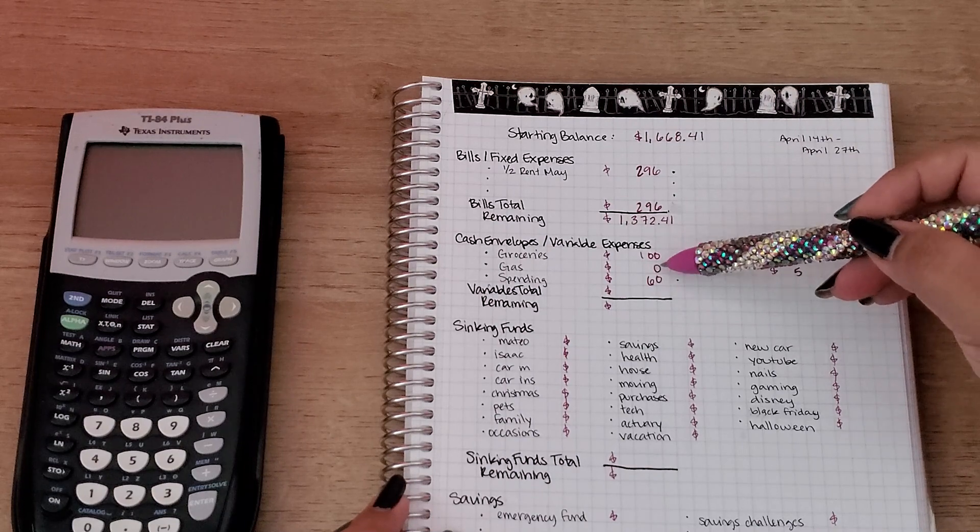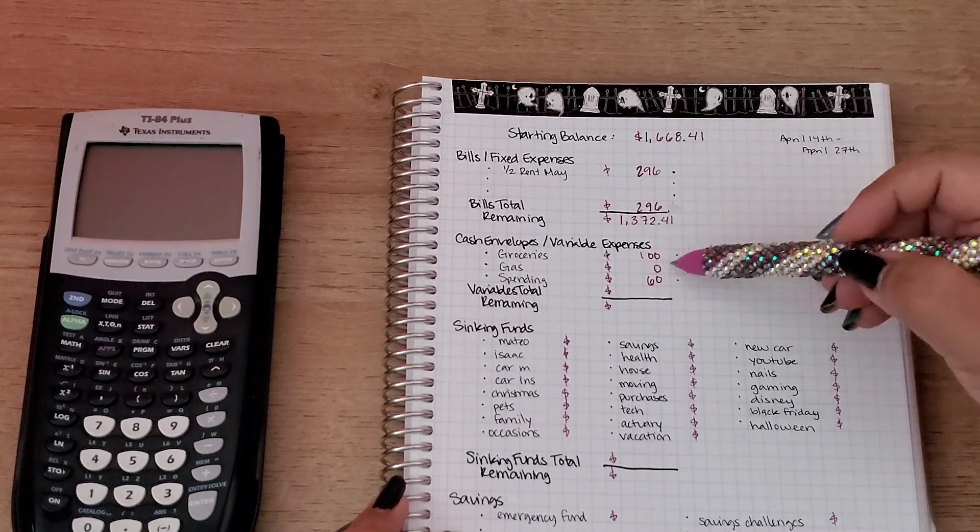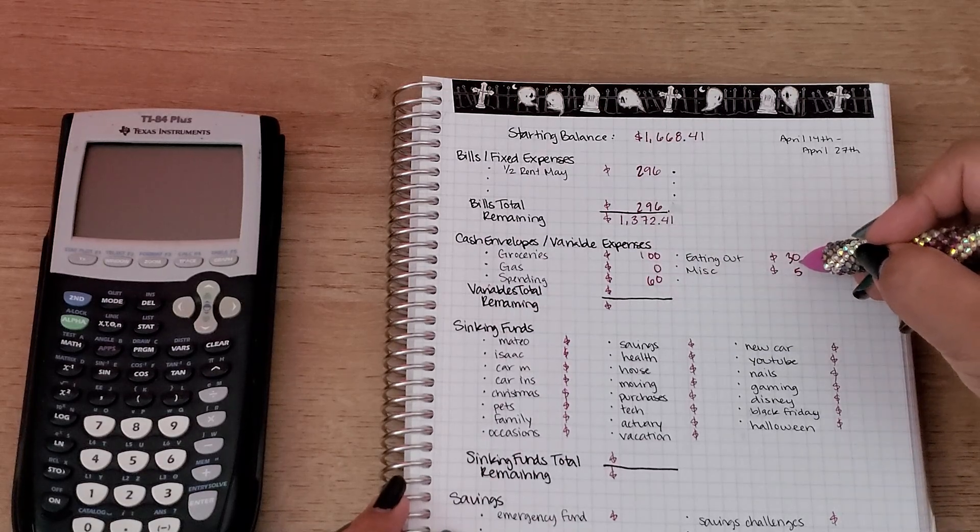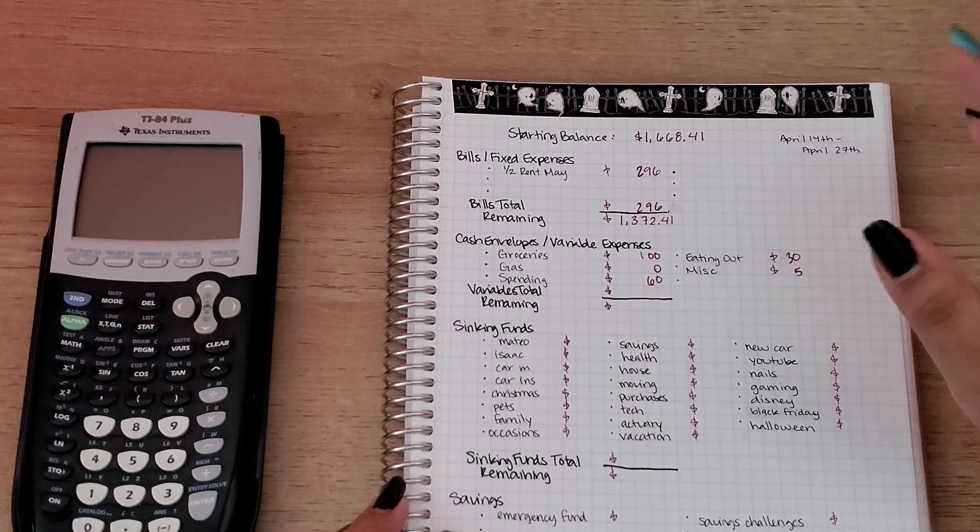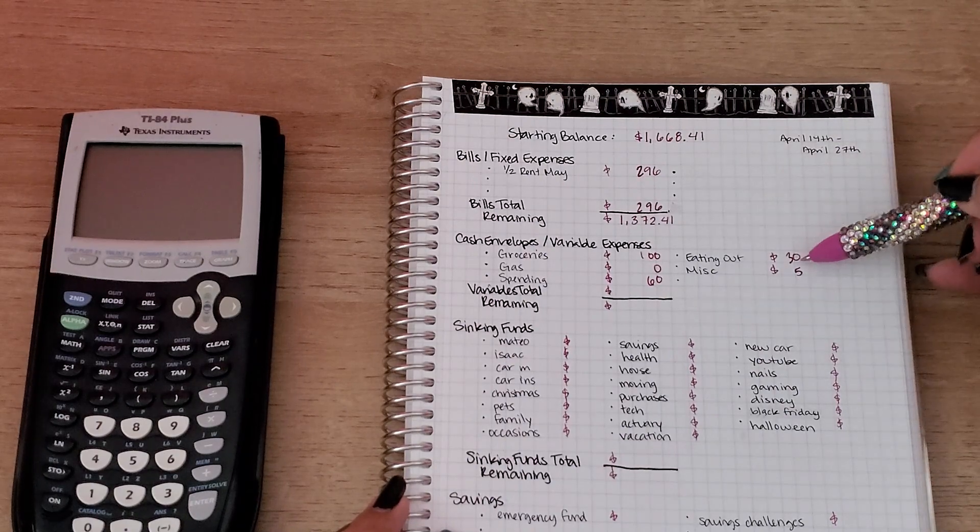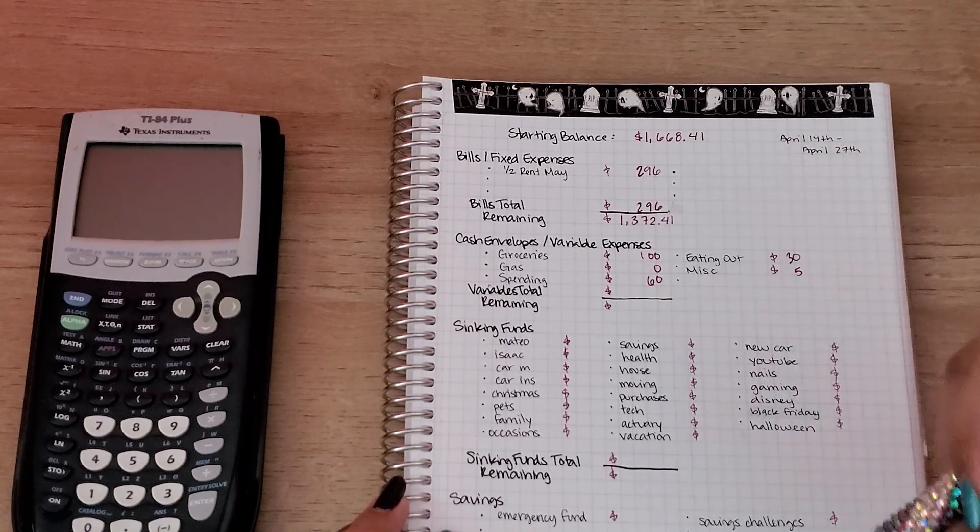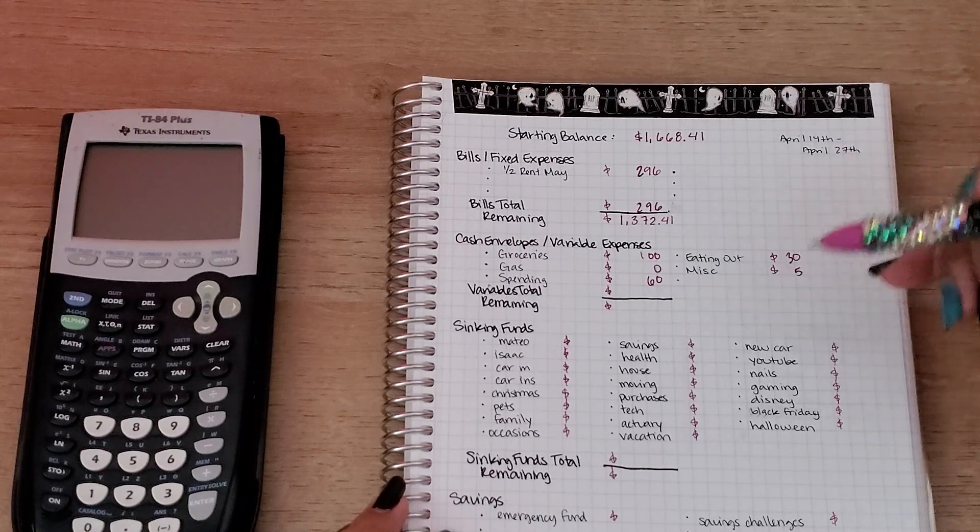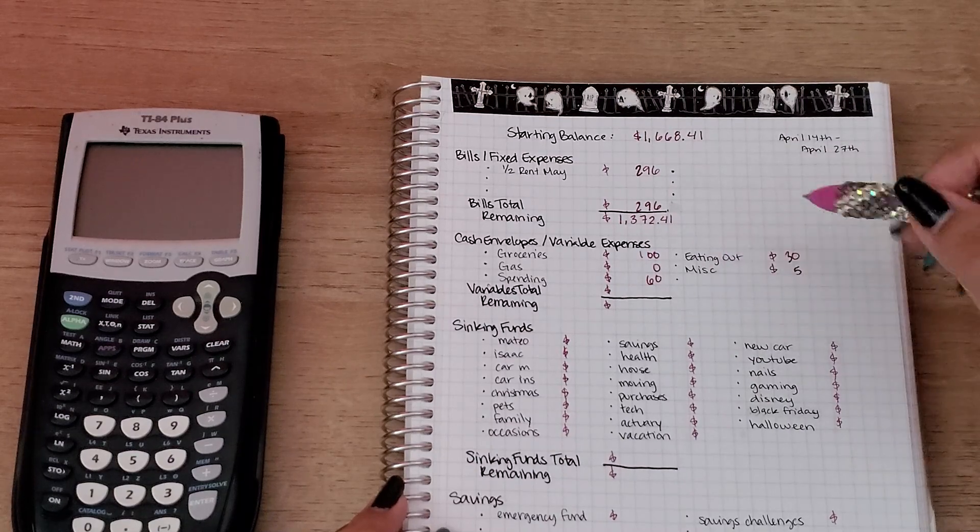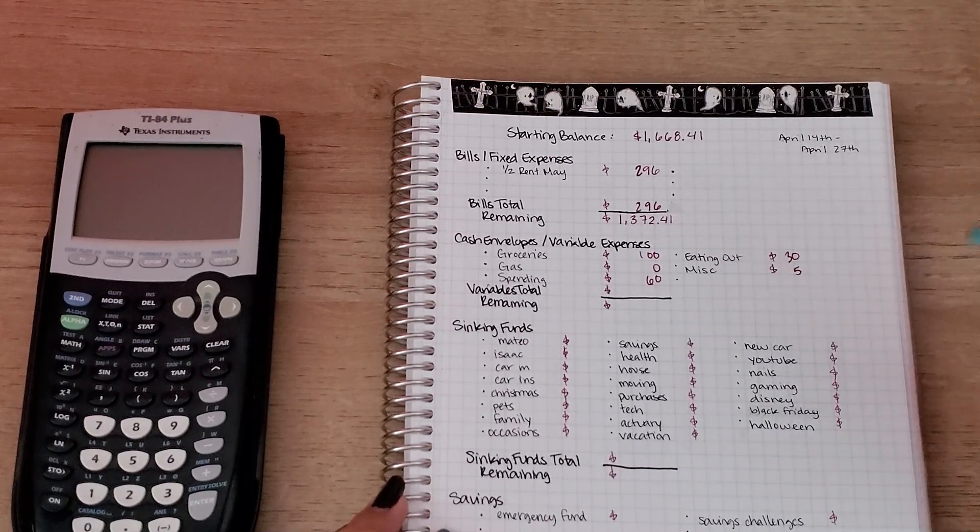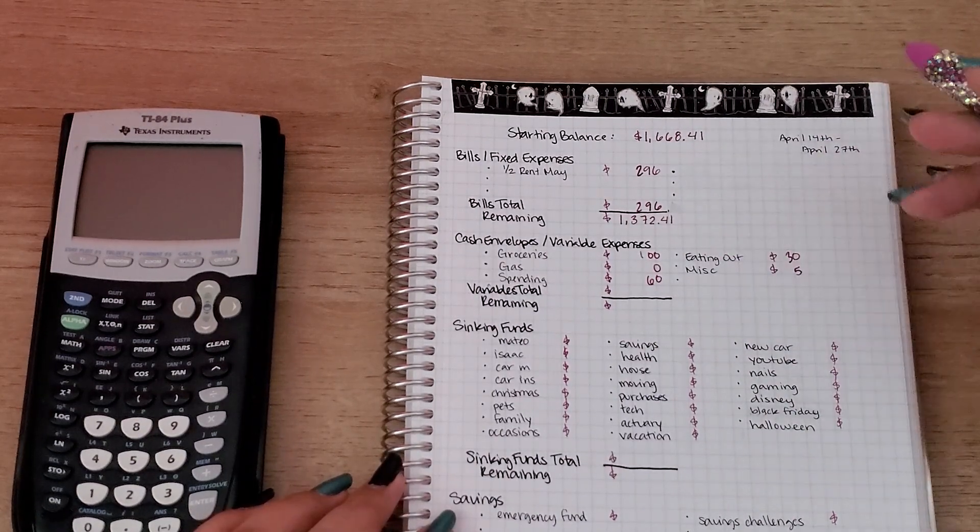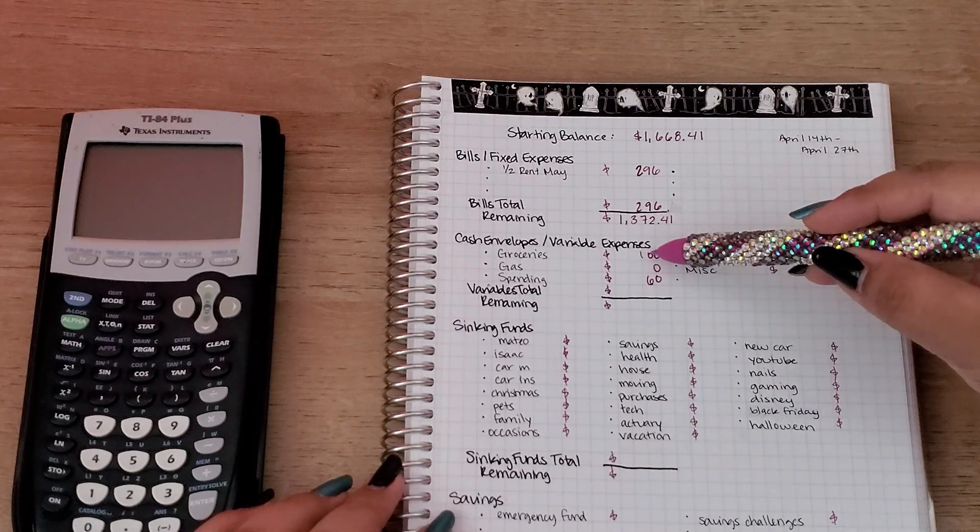I'm pretty good on gas, I still have about half a tank so we're good there. Spending is my usual $30. I'm trying to cut down on eating out. I budgeted $40 last week and was close to spending it all. No matter what amount I put here, I'm always spending it all or close to. If I give myself $40, I'll spend $40. If I give myself $50, I'll spend all $50. So I'm trying to cap myself, which is why I give myself $30 for two weeks. Miscellaneous is $5, so that brings a total to $195.